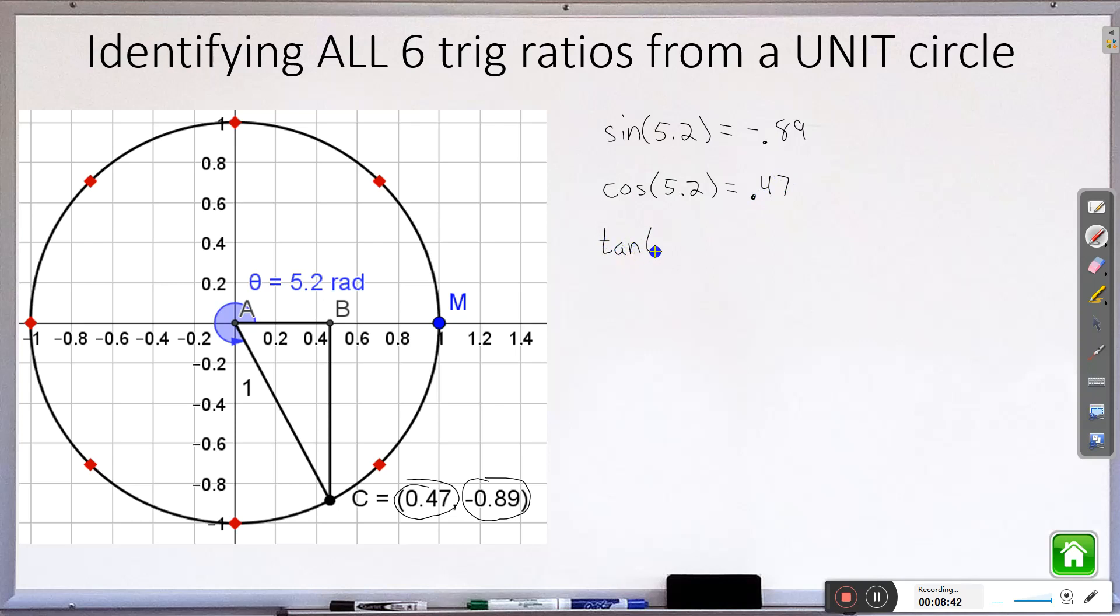And tangent. Tangent will still be a fraction. That one didn't change at all. So we will take our y value negative 0.89 and divide by our x value 0.47. Which that one we would throw into the calculator divided by 0.47 gives us negative 1.89. And if you want to you can certainly check these on a calculator just type this in. As long as you're in radians it should give you this number. But now I said all 6. So we have 3 more to do.